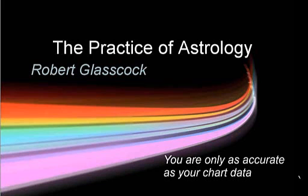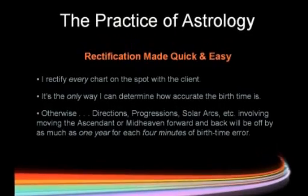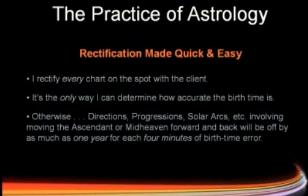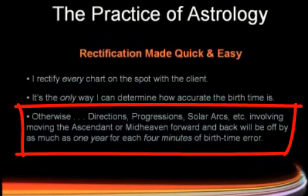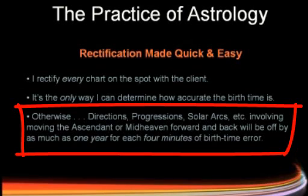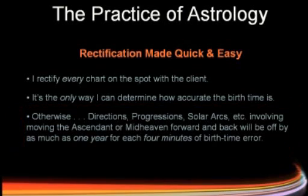I rectify every chart on the spot with the client. It is the only way that I can determine how accurate the birth time is. Otherwise, directions and progressions and solar arcs — anything involving moving the ascendant or the midheaven forward or back — will be off by as much as one year for every four minutes of birth time error.